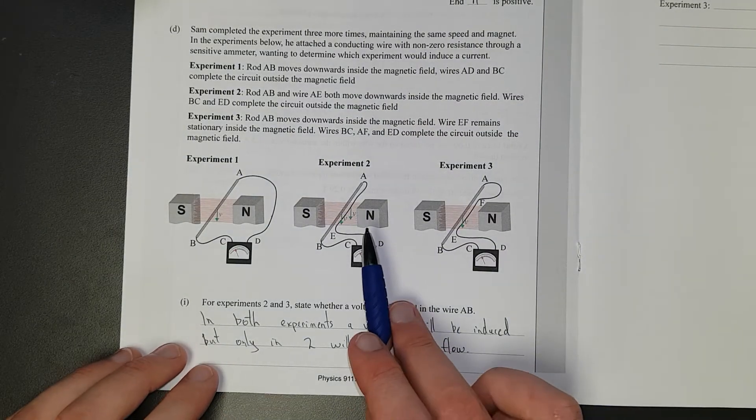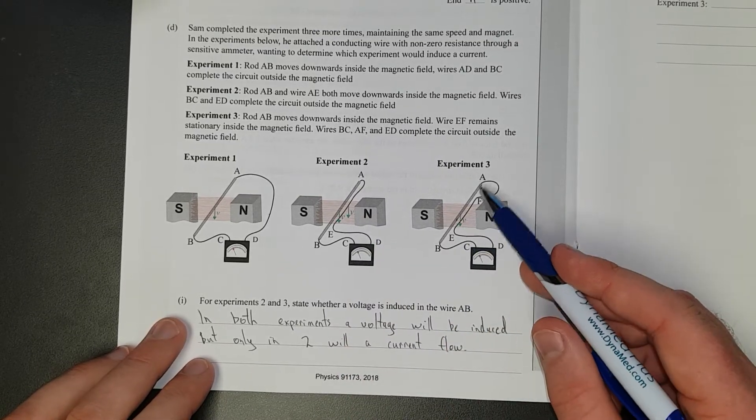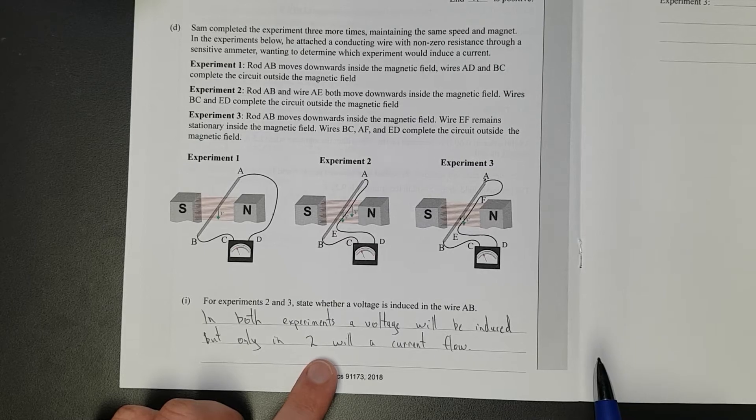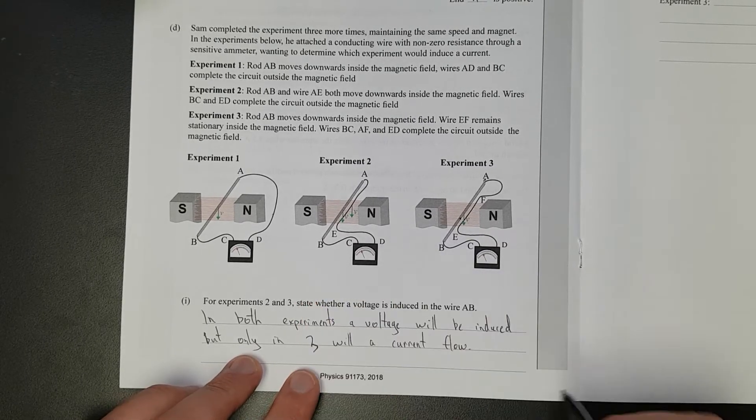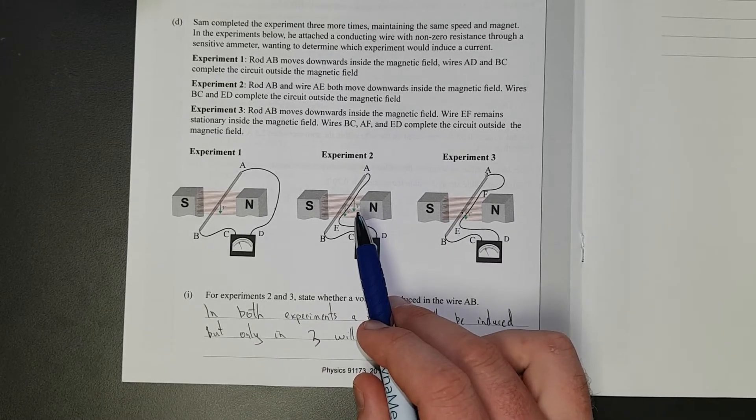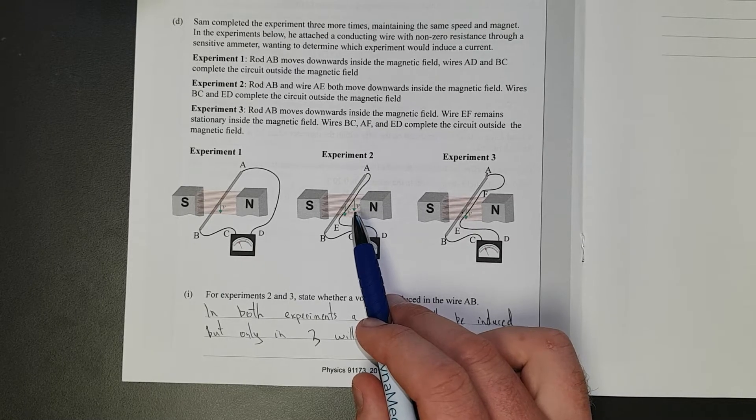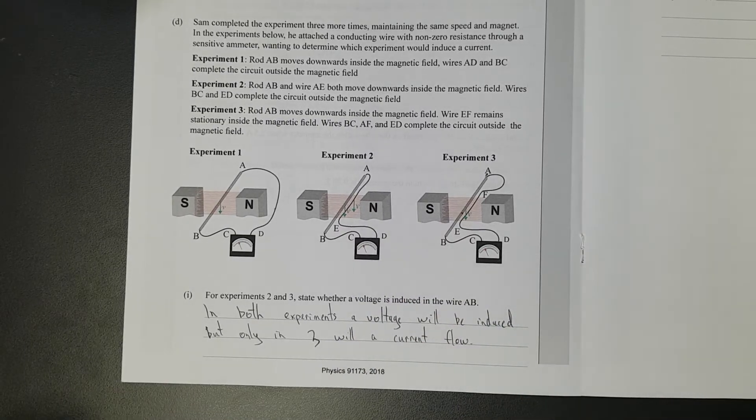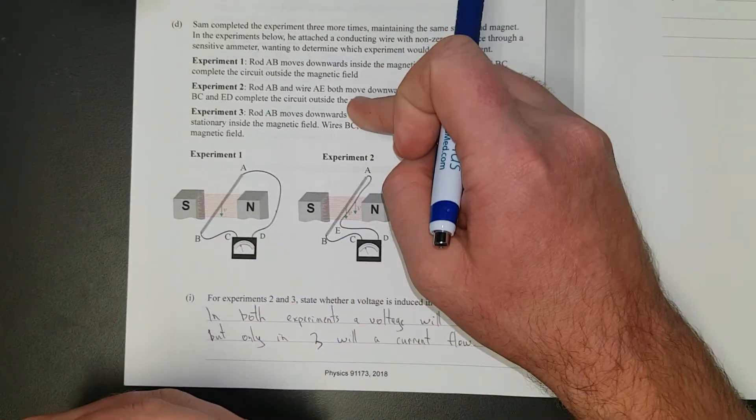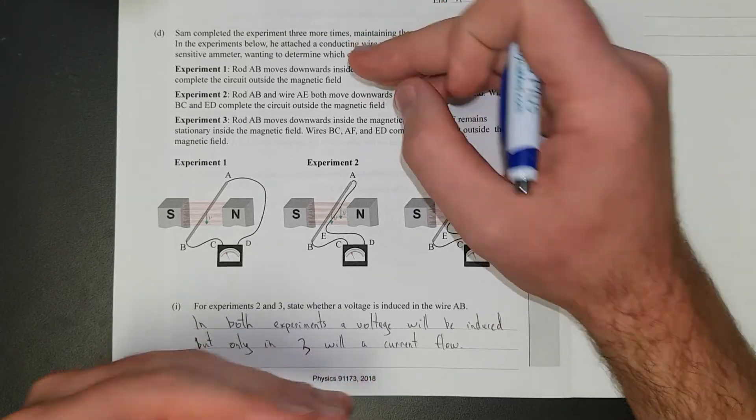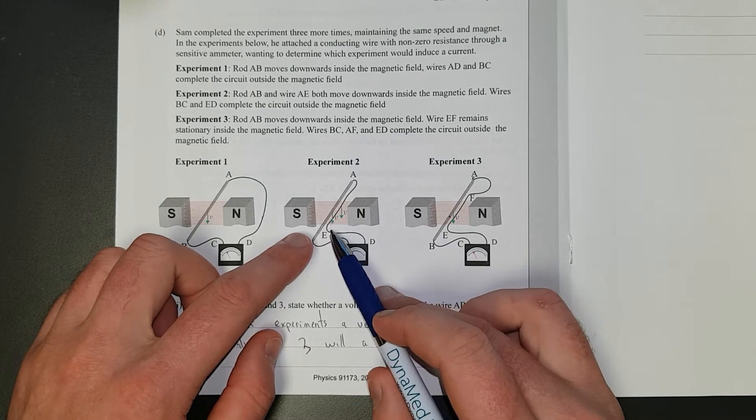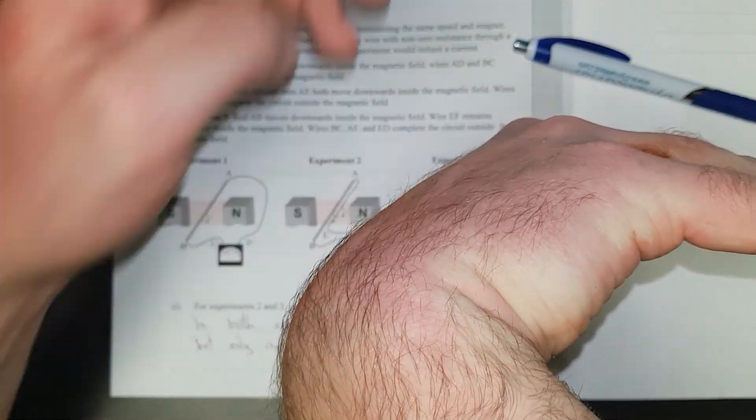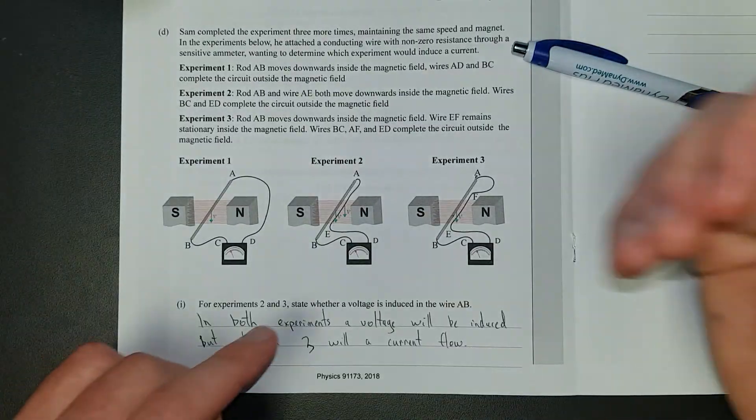Right, so in both experiments, so two and three, a voltage will be induced in the rod AB. But in only three, a current will flow, not two. This is a really subtle question, and requires a very good understanding the difference between voltage, which is potential difference. It literally means the electrons have separated apart. So one end has less electrons than the other, statistically speaking. So, here, rod AB is moving down, so all the electrons, so here's right-hand slap rule, it's moving down. North to south, that's magnetic field, the velocity is downwards. All the electrons are going to shunt to B.